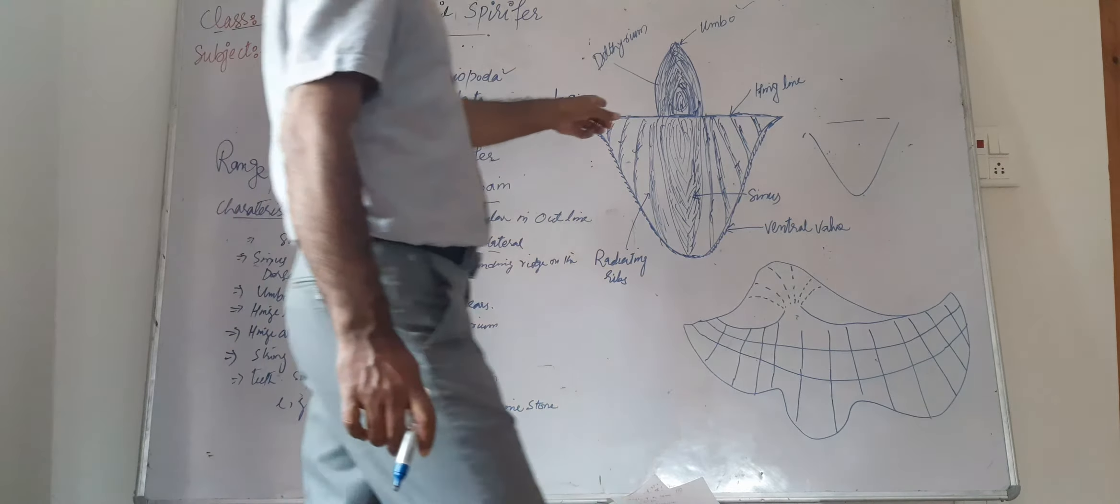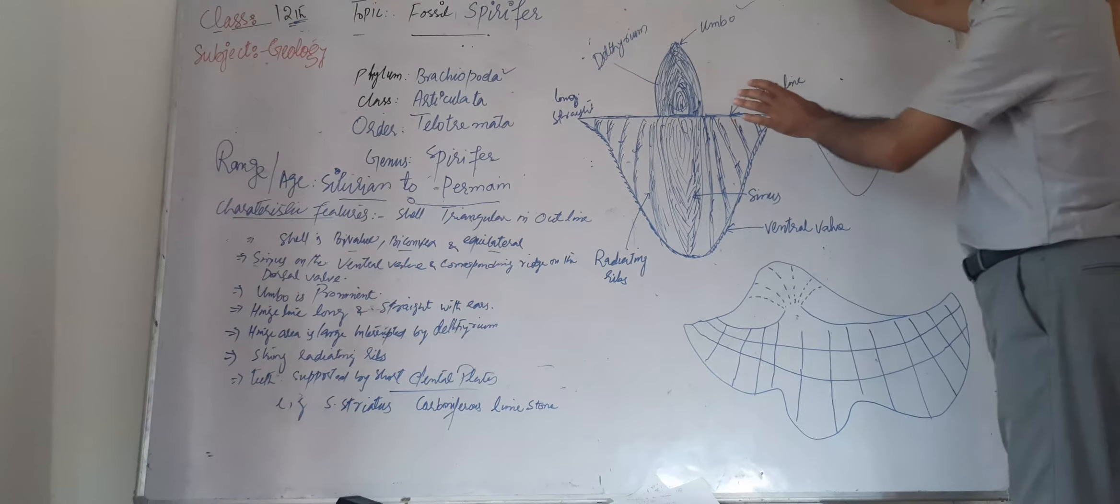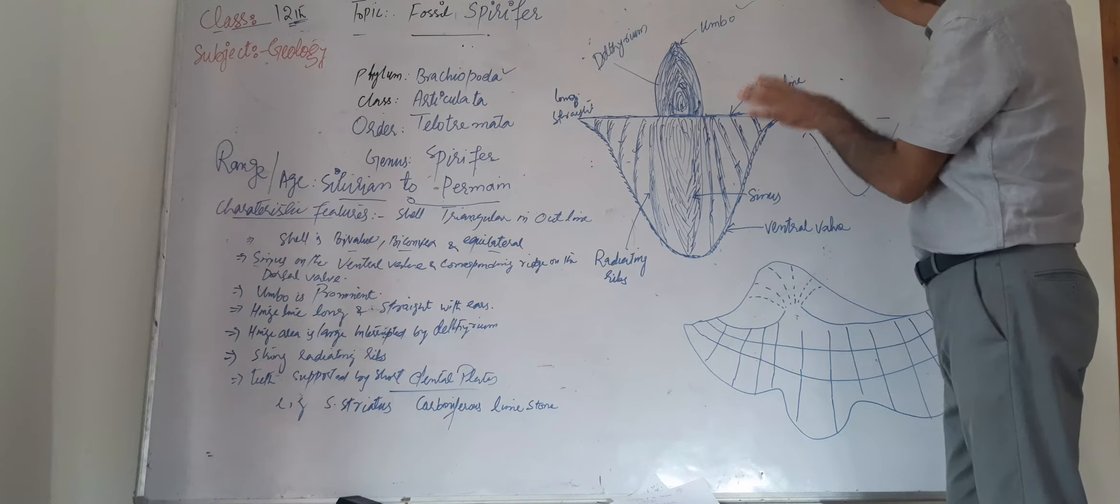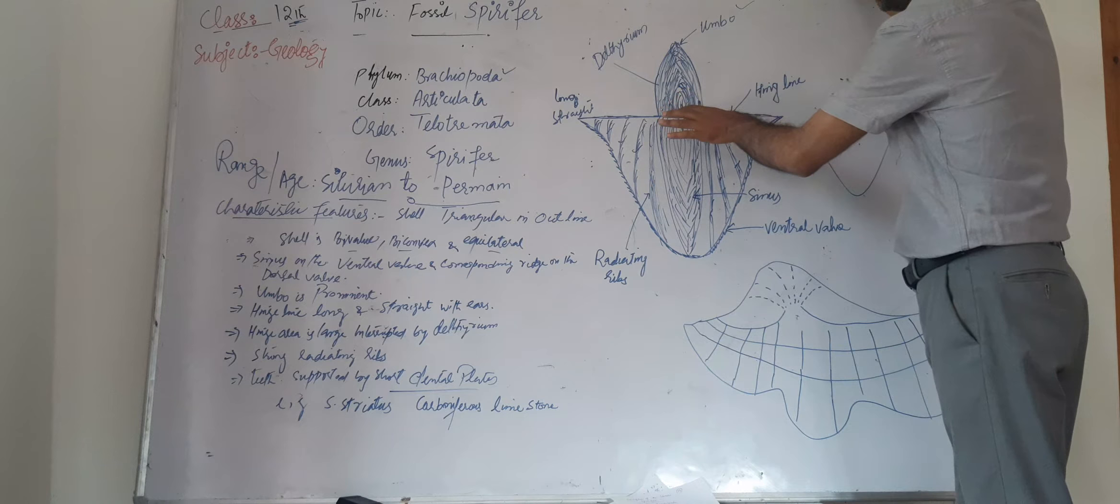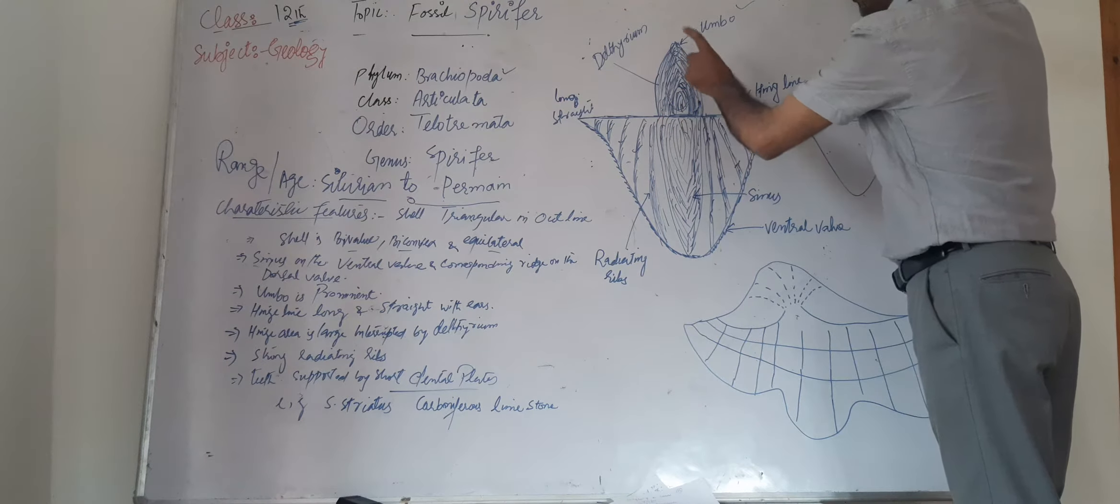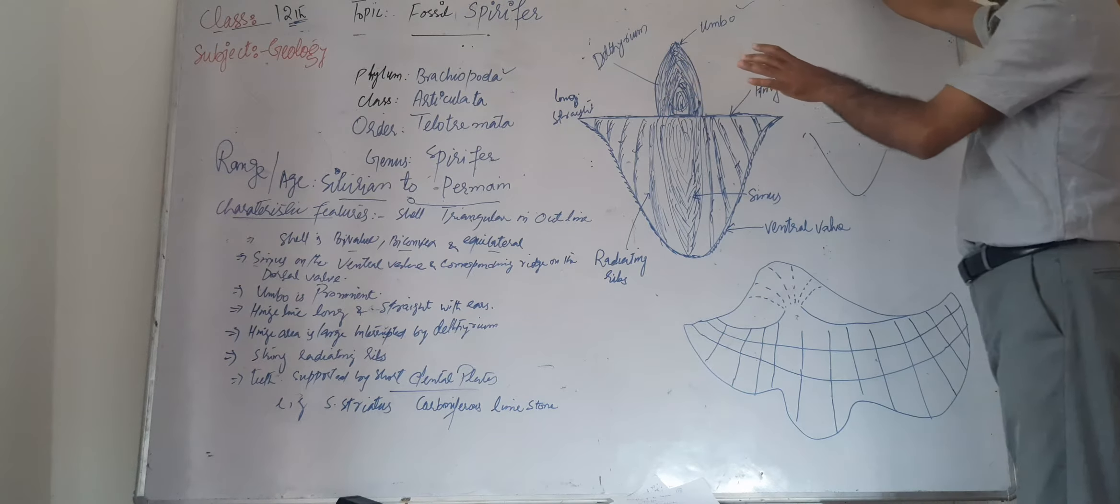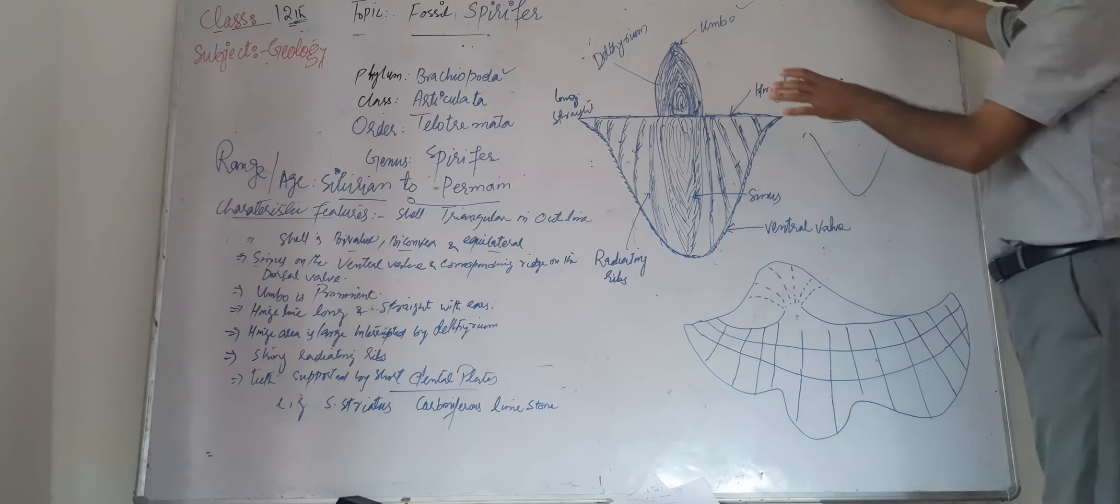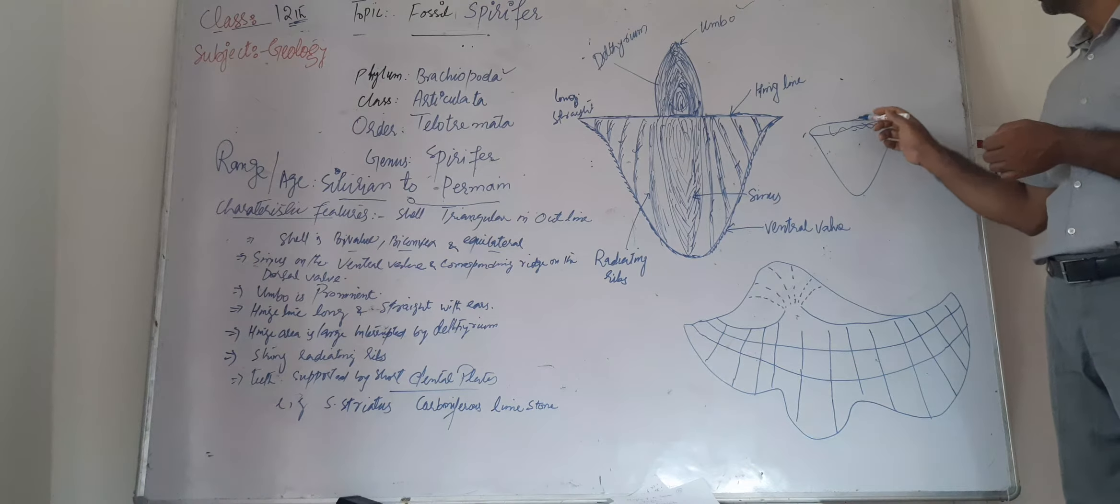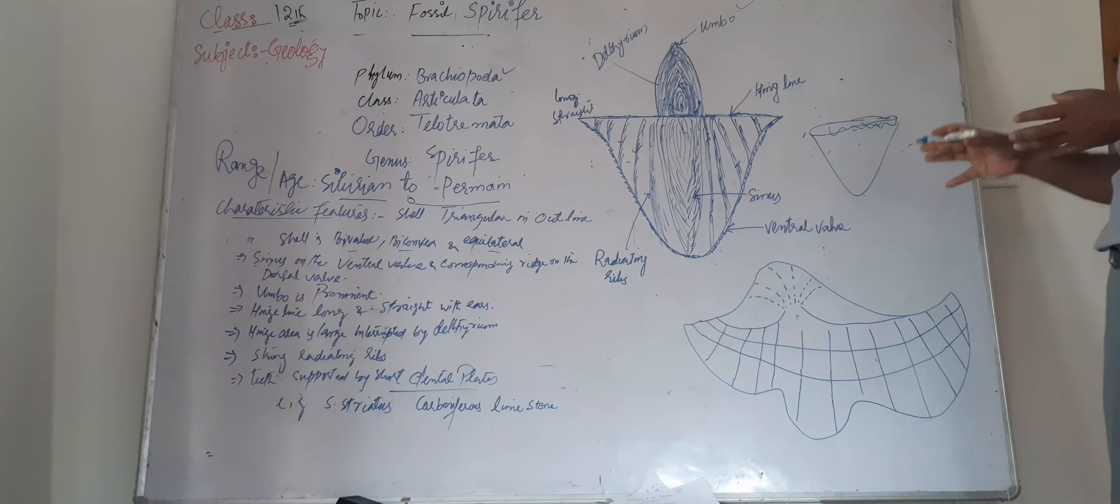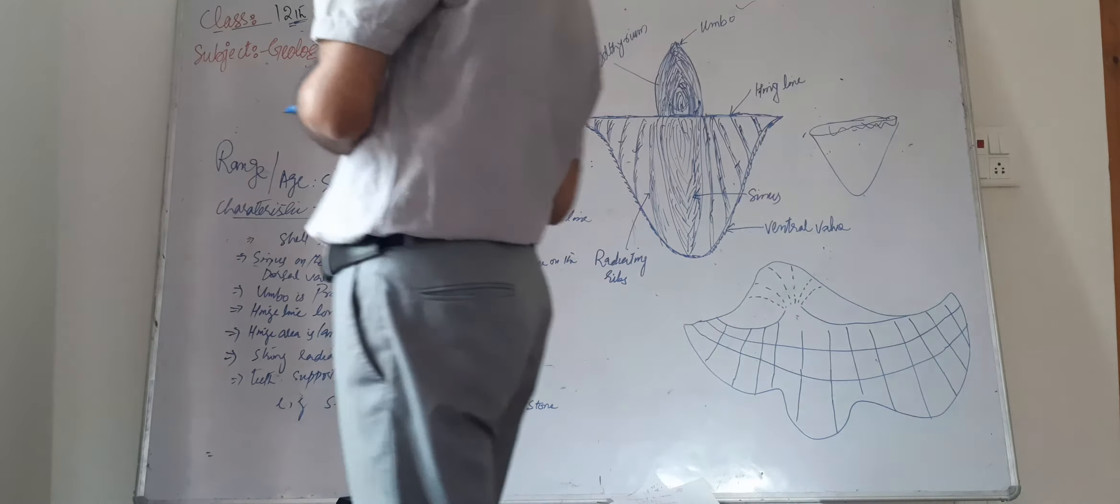And teeth are on the hinge line. In some shells, teeth are present but in some rare cases teeth are not present. So in this type of shell, in some Spirifer type of fossil, the teeth are supported by short dental plates. On one side there are short dental plates, and on the other wall of the shell there are the sockets. So on one side, means on one wall, the teeth are supported by short dental plates.